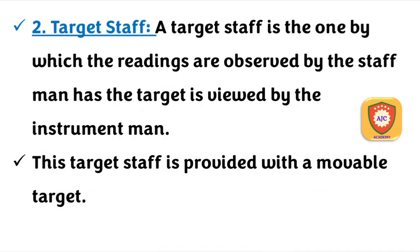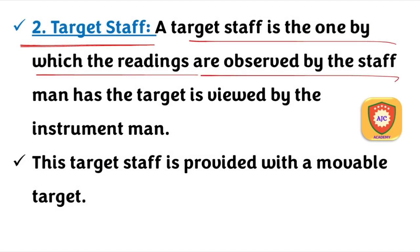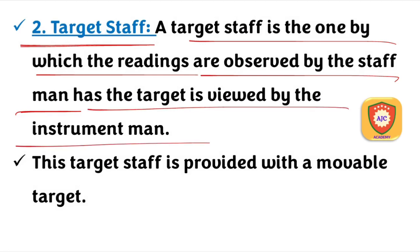The second type of staff is the target staff. The target staff is one which is observed by the staffman. The target is viewed by the instrument man, but the reading is called out by the staffman.